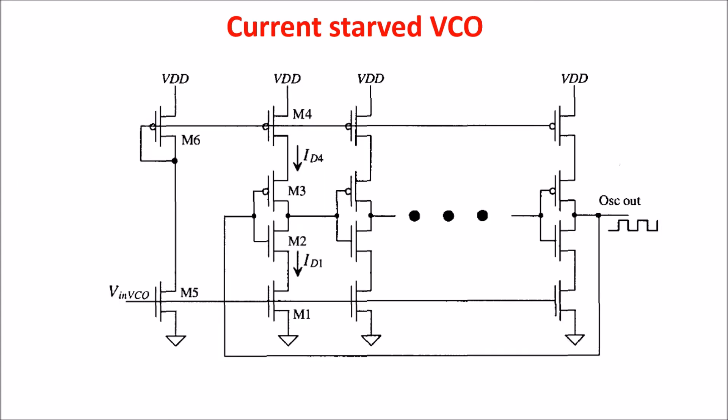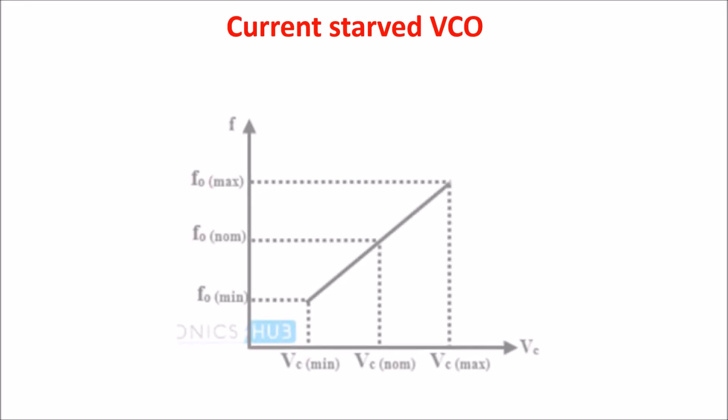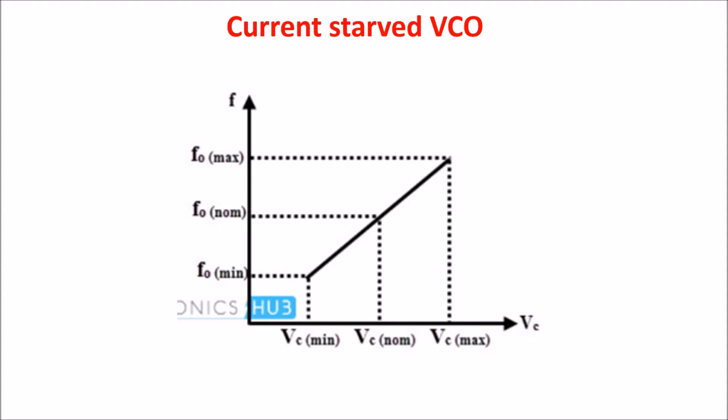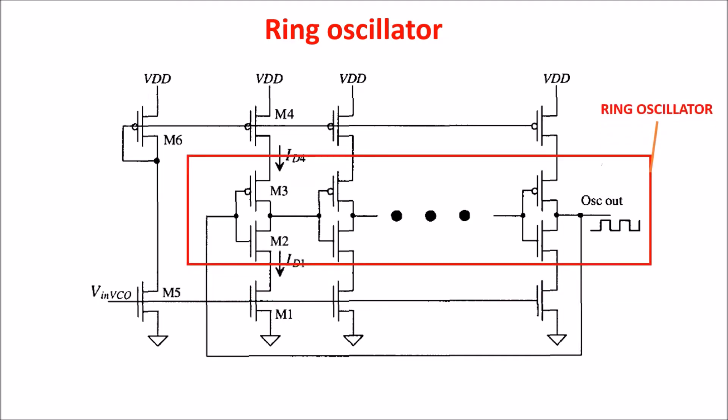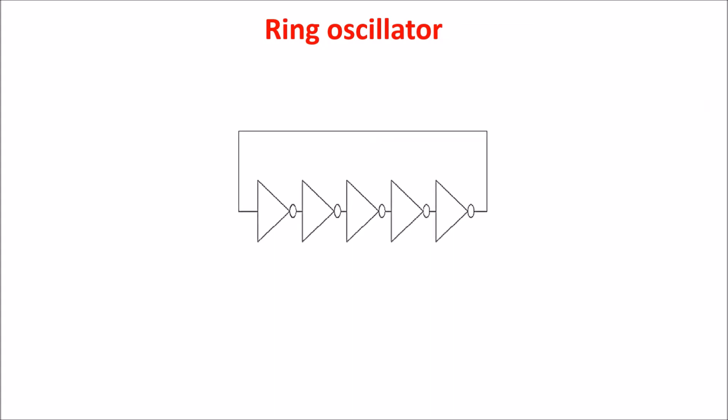Now, with the voltage-controlled oscillator — specifically the current-starved VCO — which is not ideal because the input voltage is not a linear function of the frequency, we'll also see a way to linearize it. The current-starved VCO is a type of VCO based on a ring oscillator, with extra CMOS transistors acting as current sources for the inverters. A ring oscillator is a cascade of an odd number of inverters with feedback.